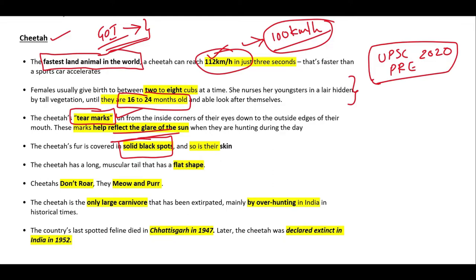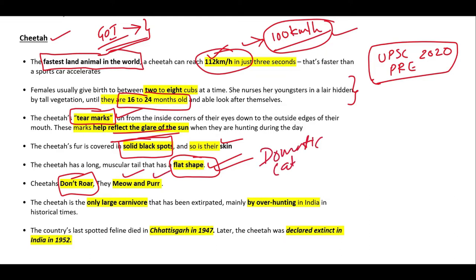There are solid black spots present over both the skin as well as the fur of the cheetah. The cheetah is also known for a flat-shaped tail — the flat shape helps it change direction easily at higher speeds. Importantly, cheetahs do not roar like lions and tigers; instead they meow or purr just like domestic cats.